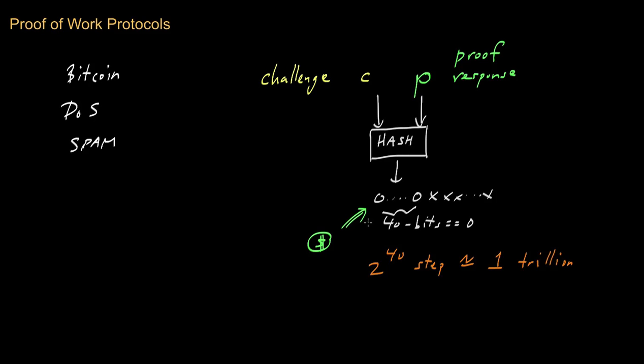One interesting thing with these proof-of-work schemes is they can be ratcheted up or ratcheted down. If you want to require even more computational heavy lifting to come up with a correct proof string, you want to increase the work that's going to be proved, what you can effectively do is increase the requirement on the number of leading zeros. Every time you add an additional zero, you effectively double the computational horsepower needed on average, because you're effectively requiring one more coin flip to come up heads, and that entails doubling the number of coin flips. If I had 41 coin flips and I required 41 straight heads, that would require about twice as much effort as requiring 40 straight heads.